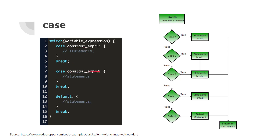We have a break after each case because when one case is satisfied and we go through the code in that case, we don't need to go through all remaining cases. We break out of the switch. In the flowchart, in each case if it is true it executes some statements and breaks out of switch; if false, it goes to the next case.